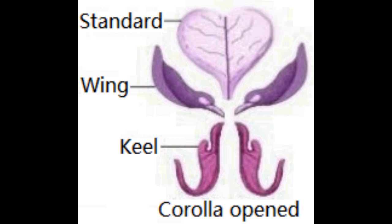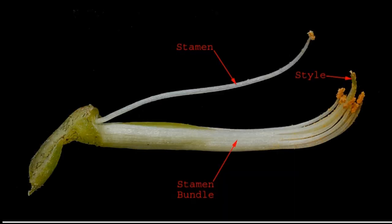These plants have ten stamens: nine stamens are arranged in a bundle and one remains free. The filaments are united into two bundles but the anthers remain free — a condition called diadelphous. The gynoecium is monocarpellary, superior, and unilocular. As mentioned earlier, the androecium and gynoecium are enclosed by the keel petal.